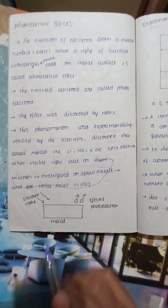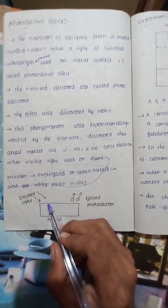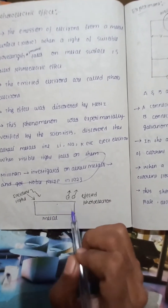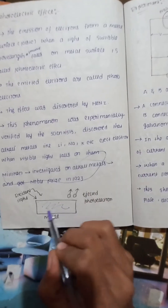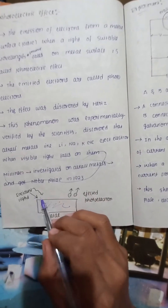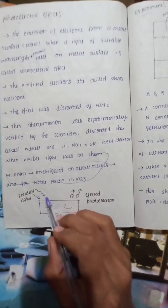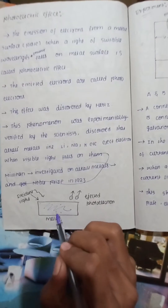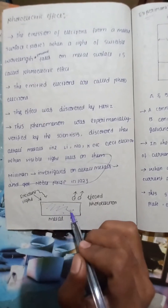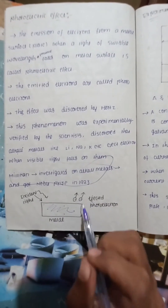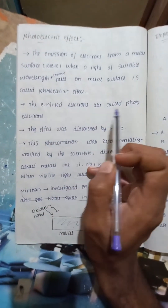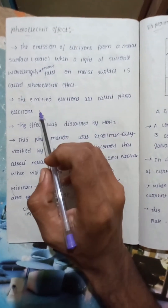This is the photoelectric effect — it means that when a light of suitable wavelength is incident on a metal surface, electrons are ejected. The emitted electrons are called photoelectrons.